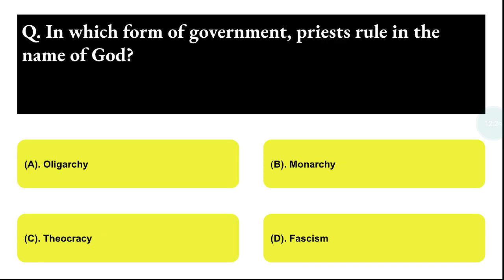Next question: in which form of government do priests rule in the name of God? Option A: Oligarchy, Option B: Monocracy, Option C: Theocracy, Option D: Isis. The correct answer is option C, that is Theocracy.